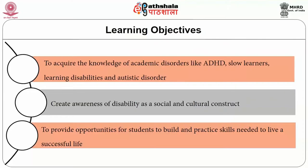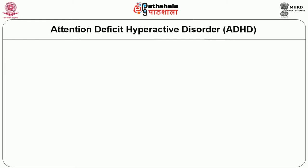speech or language therapists. Though academic disorders cannot be treated completely, various manipulative techniques and strategies can make them less of a problem. We are discussing four important academic disorders: attention deficit hyperactive disorder, autistic disorders, learning disabilities, and slow learners. The objectives are to acquire knowledge of academic disorders like ADHD, slow learners, learning disabilities and autistic disorder, create awareness of disability as a social and cultural construct, and provide opportunities for students to build and practice skills needed to live a successful life.